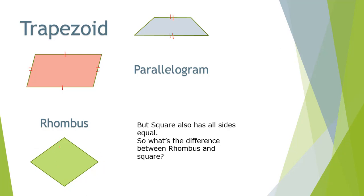So what's the difference between a rhombus and a square? In a square, all angles are equal. But in a rhombus, only opposite angles are equal.